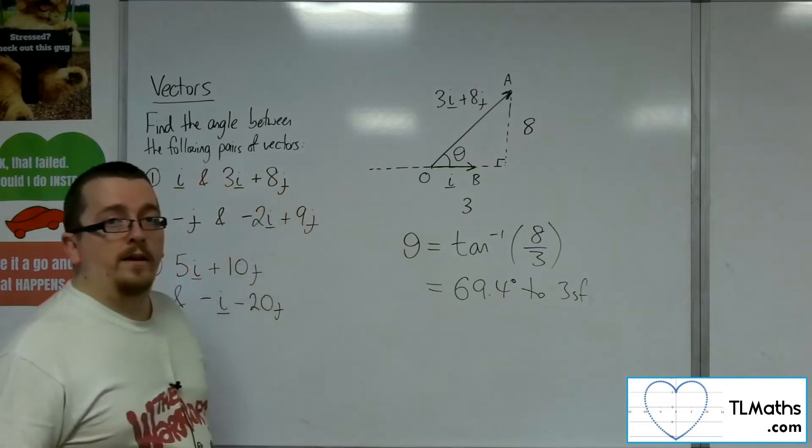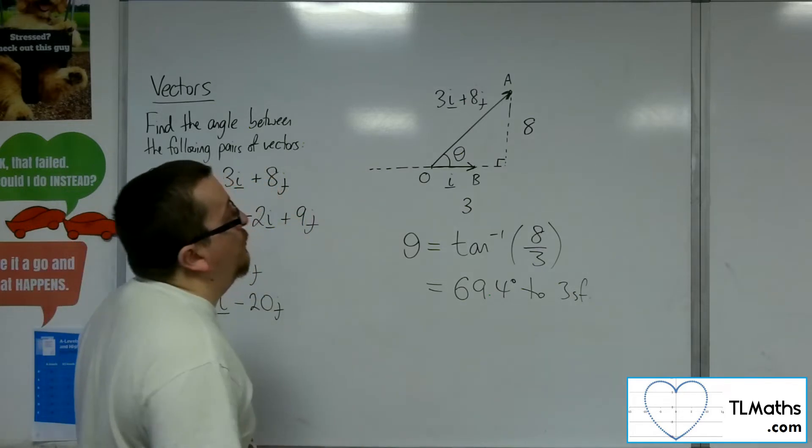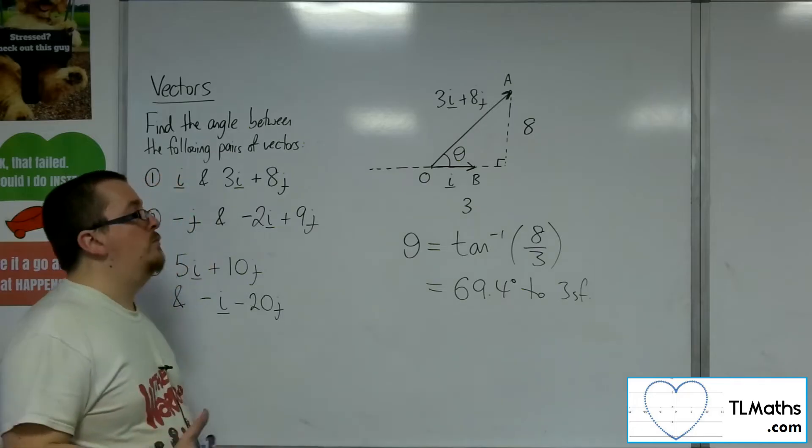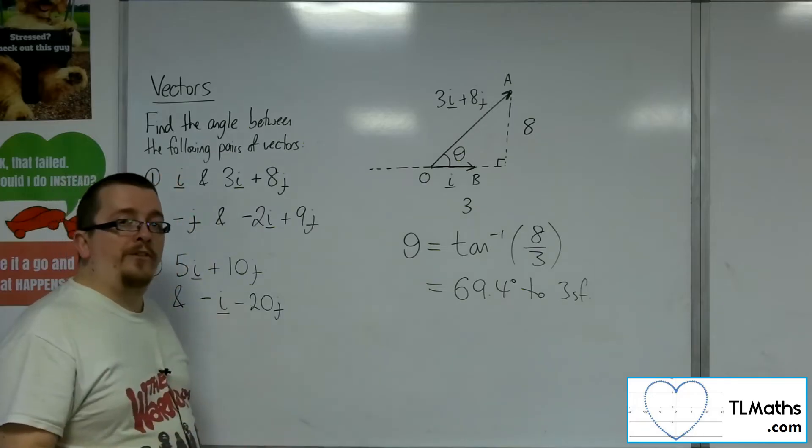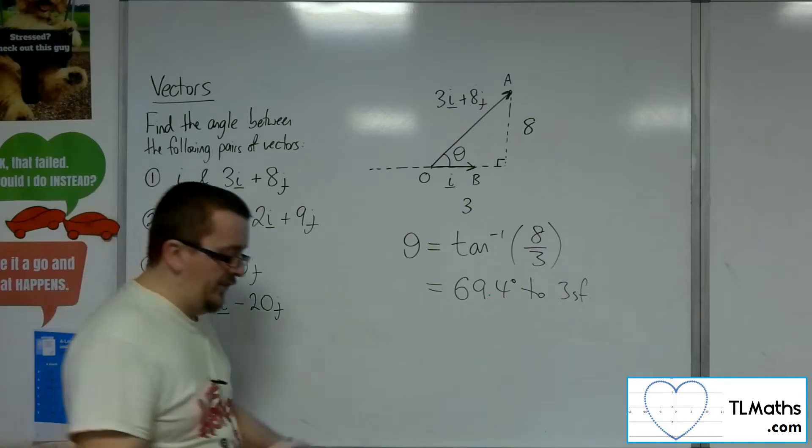So that is a lot quicker to finding that angle than it would be to find the length of all three sides and then use the cosine rule. It should still get you to the same answer. However, you might want to try it out to make sure that you can get to the same answer.